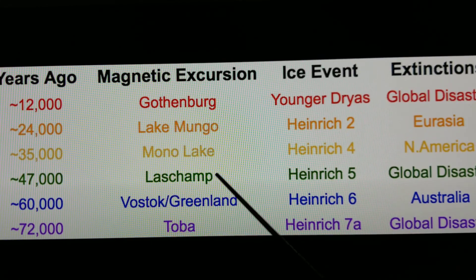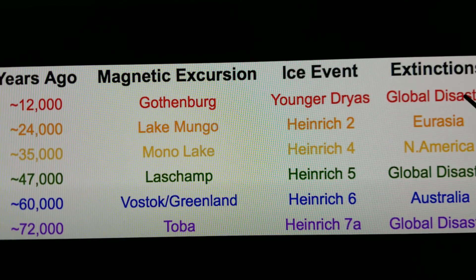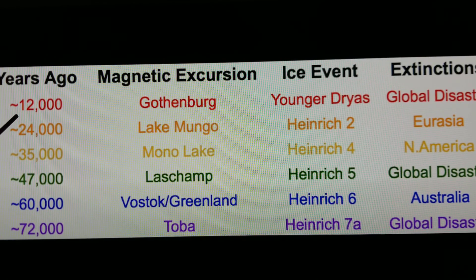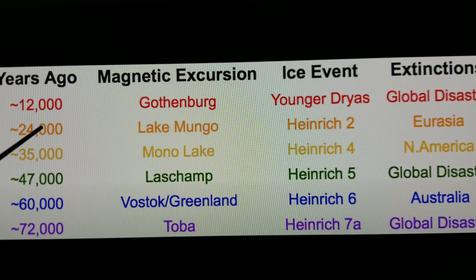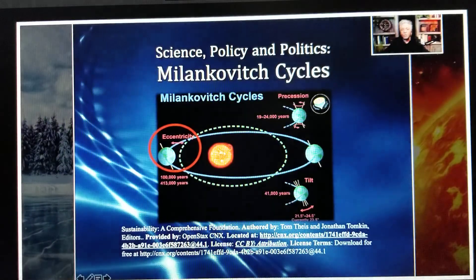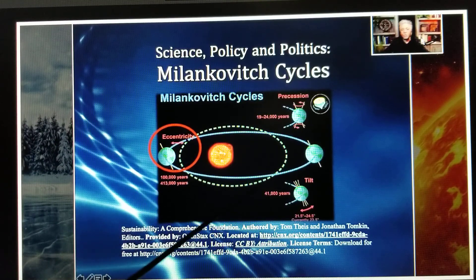If you follow this line, you see that 12,000 years ago was the global disaster — this is what the Bible refers to as Noah's Ark. Now if you follow down: 24, 36, 48, 60, 72 — every 12,000 years is a cycle, and each time there was also a global disaster. Every five cycles the Earth goes into a longer cycle around the sun — it takes longer, faster in the middle but longer winters. They call this the Milankovitch cycle.